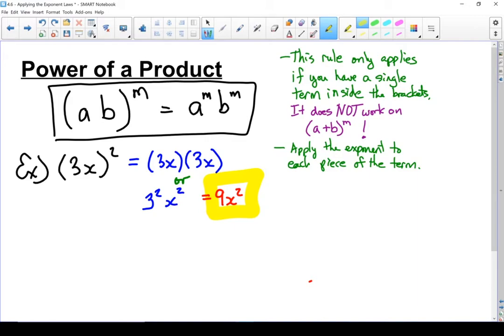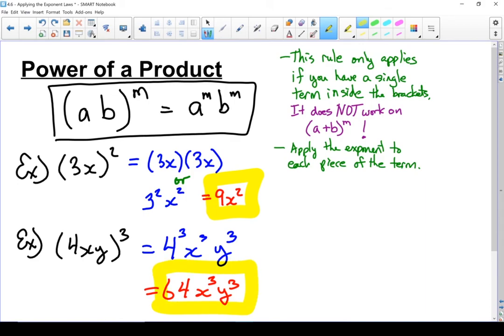Let's do one more example. I've got (4xy) to the power of 3. I'm going to take 4 and apply the power of 3, take x and apply the power of 3, and take y and apply the power of 3. 4 to the power of 3 gives me 64, and I'll leave it as x cubed and y cubed. There is my power of a product.